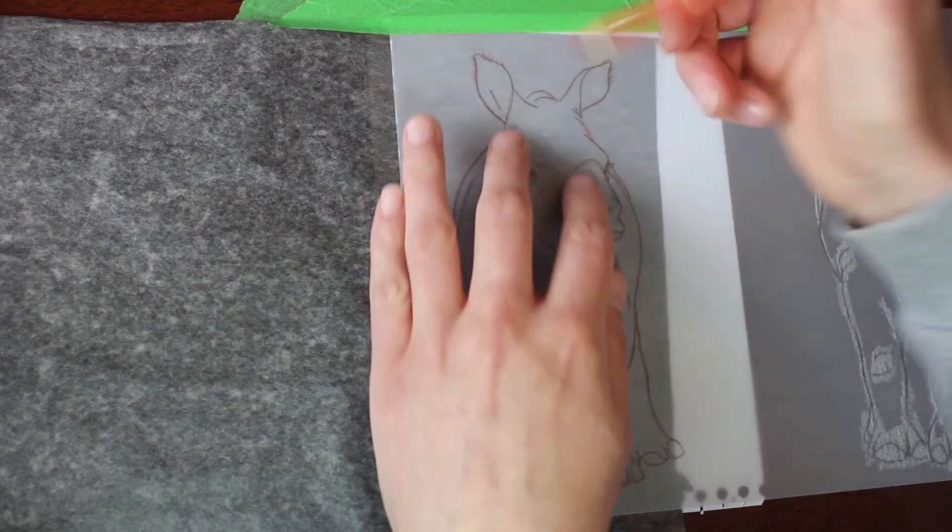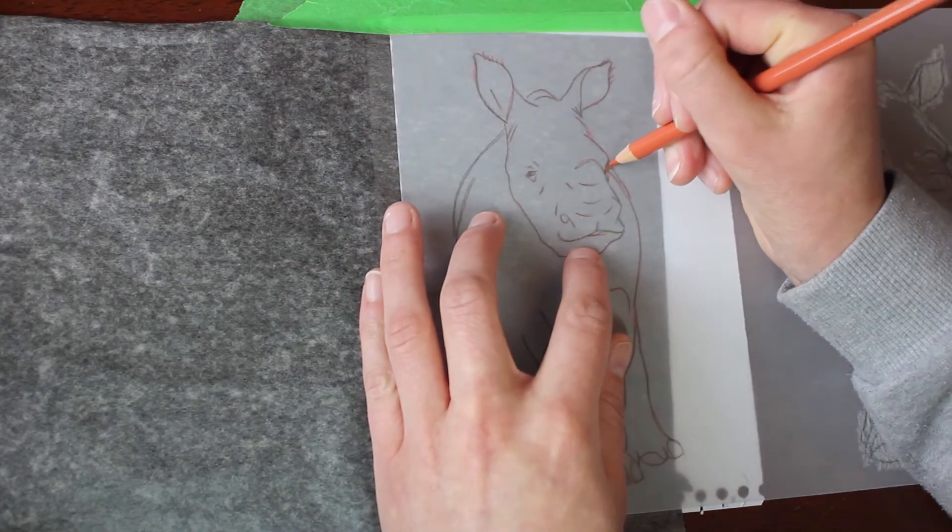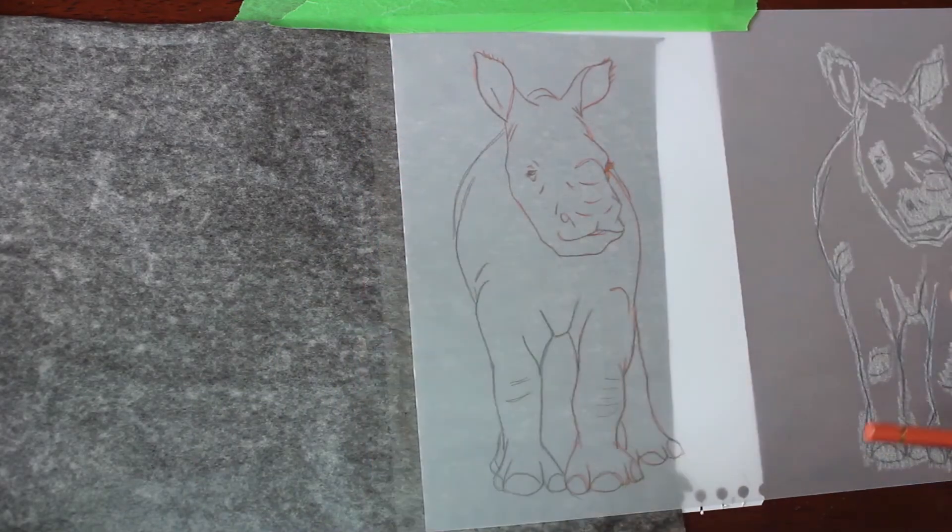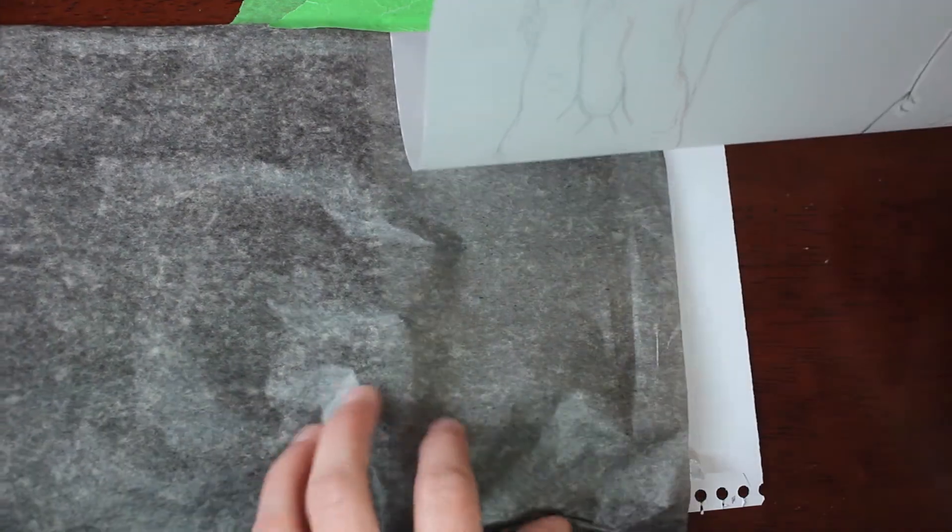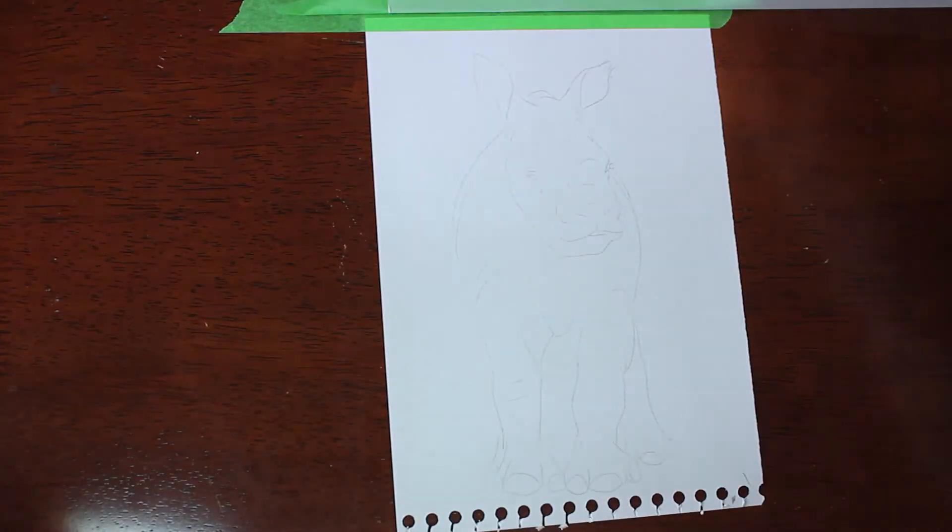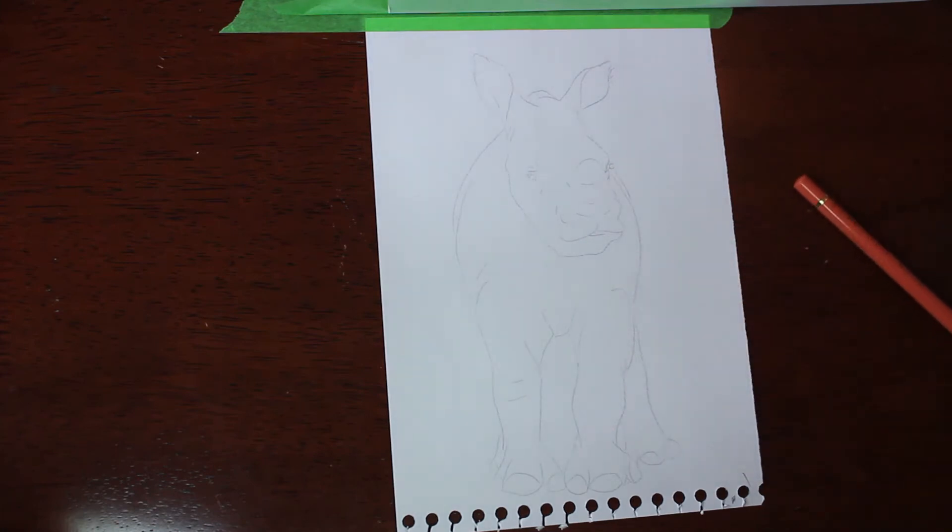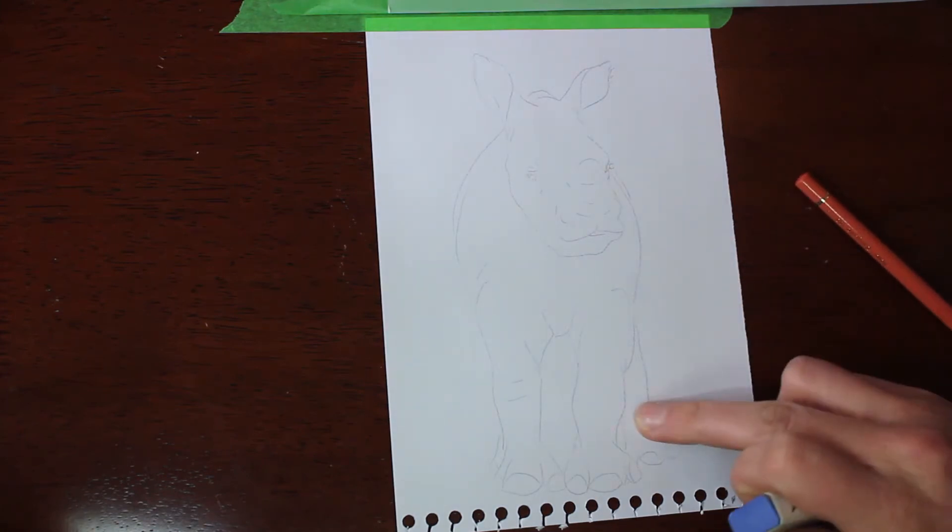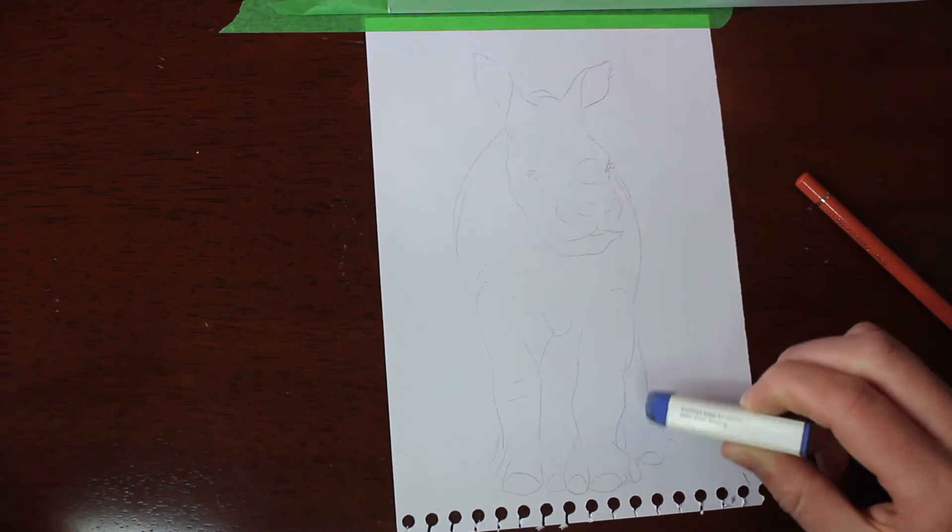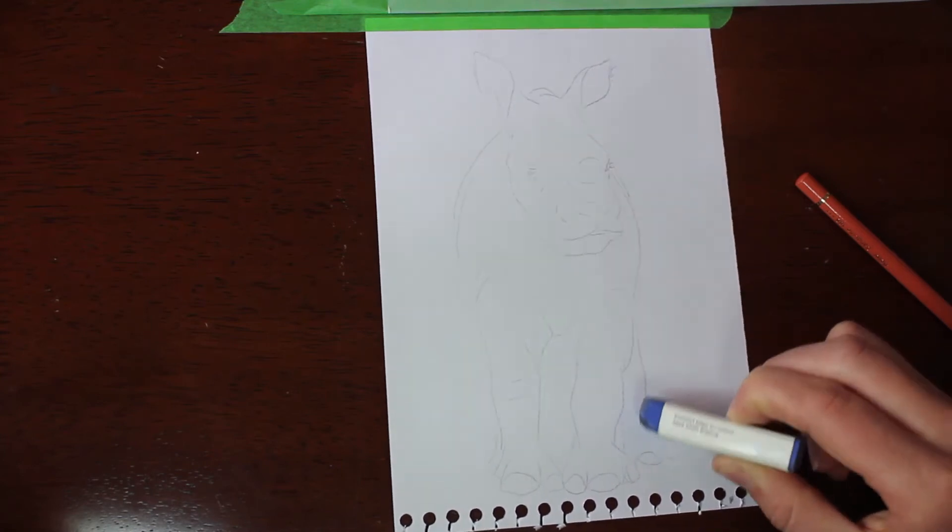Now you don't need to tape down your transfer paper because it doesn't matter if that moves but it does matter if your tracing paper moves. The good thing about transfer paper is that it doesn't smudge easily although it is a little bit harder to erase so keep that in mind if you're going to be coloring something very pale and just don't press too hard.